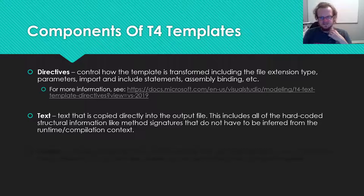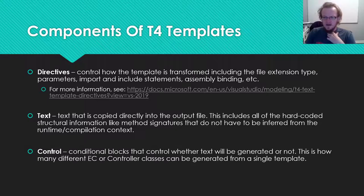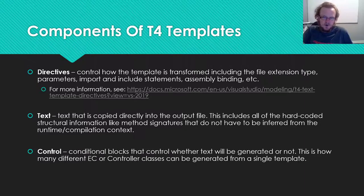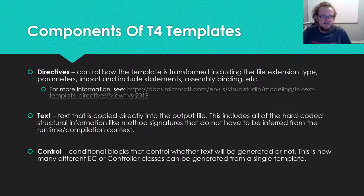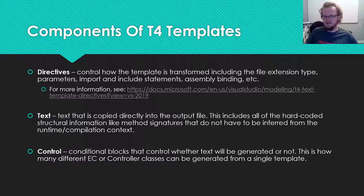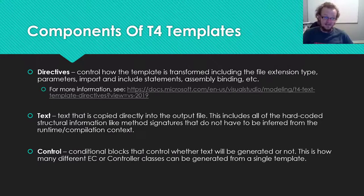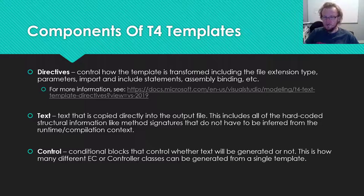The third are control blocks. What these do is allow you to run C# commands inside of the template itself. If you have a template that needs to iterate over a list and provide a dynamic list of properties, structs, or classes inside of your class or namespace, you could have a for-each loop, a for loop, a while loop, or whatever inside of one of these control directives.